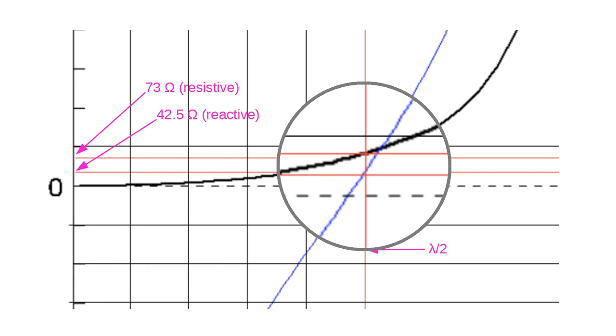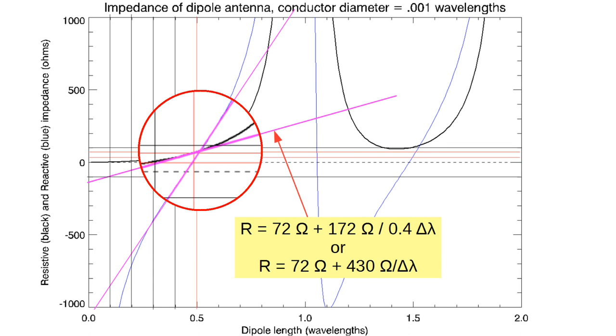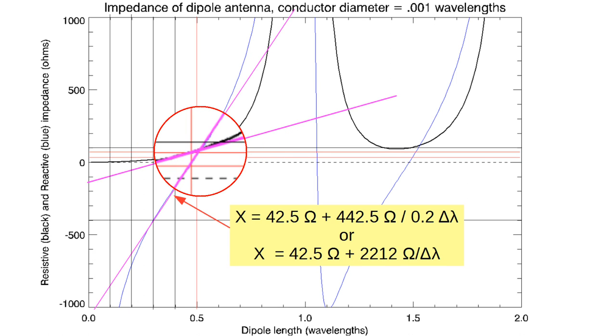Now we can ask a question. How does a dipole behave if it is used at a frequency just a bit different from the design frequency? The curves are highly non-linear, but in the nearby region, we can treat them as linear. Okay, back to high school algebra. We draw a line tangent to the resistance line at a half wavelength. Near a half wavelength, the intercept is 72 ohms, plus a slope of 430 ohms for every change in wavelength. The equation shown is only valid for wavelengths quite close to the half wavelength point. Now let's do the same for the reactance. We come up with an intercept of 42.5 ohms and 2,212 ohms for every lambda deviation from a half wavelength. Again, the formula is only valid for small deviations from one-half lambda, where lambda is the Greek letter for wavelength.